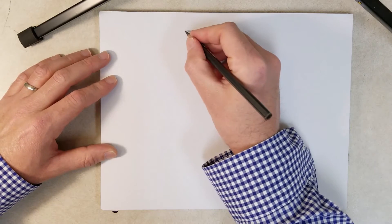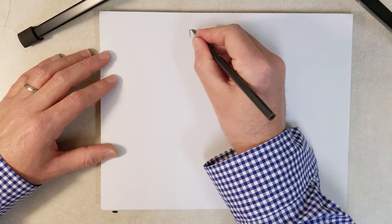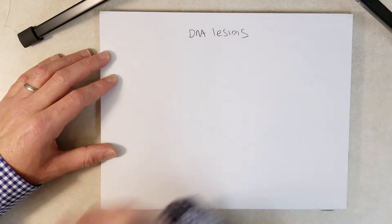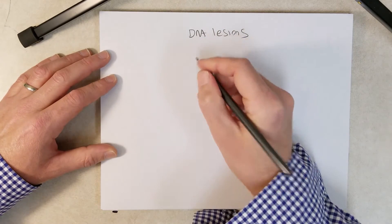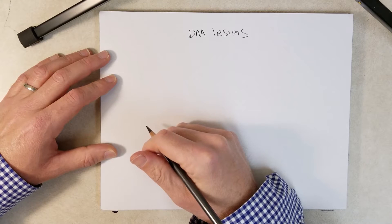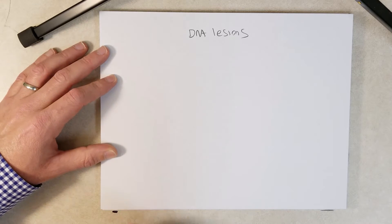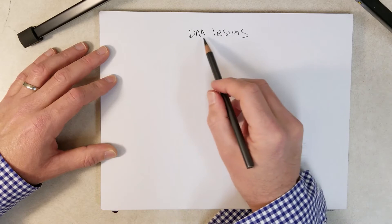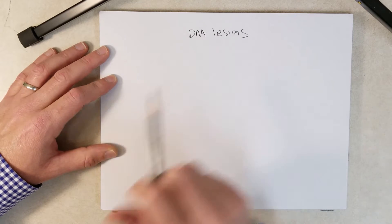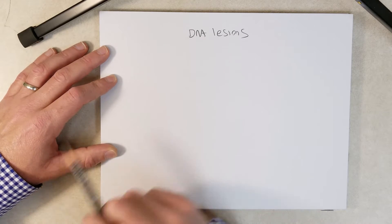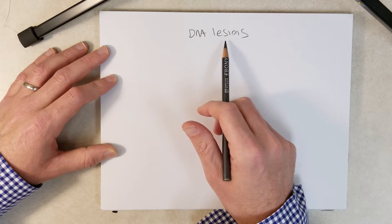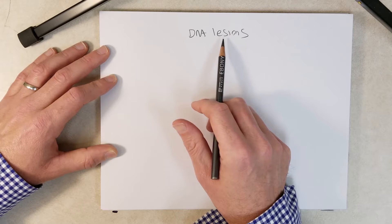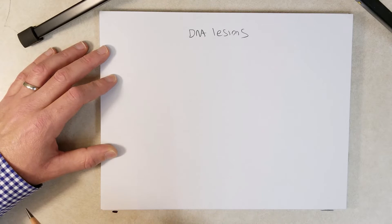In this video we are going to talk about DNA lesions. A DNA lesion is essentially any type of DNA damage, any type of modification to the DNA, any change in the DNA that makes it look abnormal.